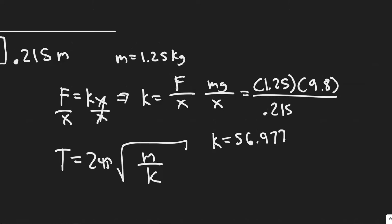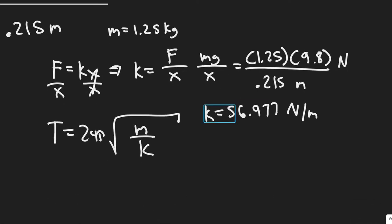That'll give us a k value equal to 56.977. The units are going to be newtons per meter, because this is force, which is newtons, and then meters here. So we have the k value now in newtons per meter. And so we've got that.